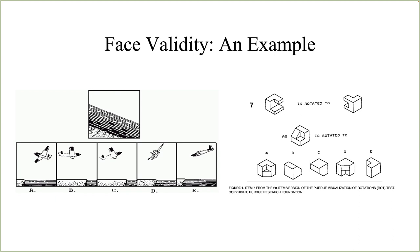Here's an example of face validity. Both the Flight Apperception Test (on the left) and the Purdue Visualization of Rotation Test (on the right) attempt to measure spatial visualization. If you were a pilot applicant, you would probably think the one on the left is a better predictor of flying ability. But actually, both predict aspects of piloting quite well. The naive, non-expert test taker would wonder about the question on the left but be very comfortable with the one on the right.